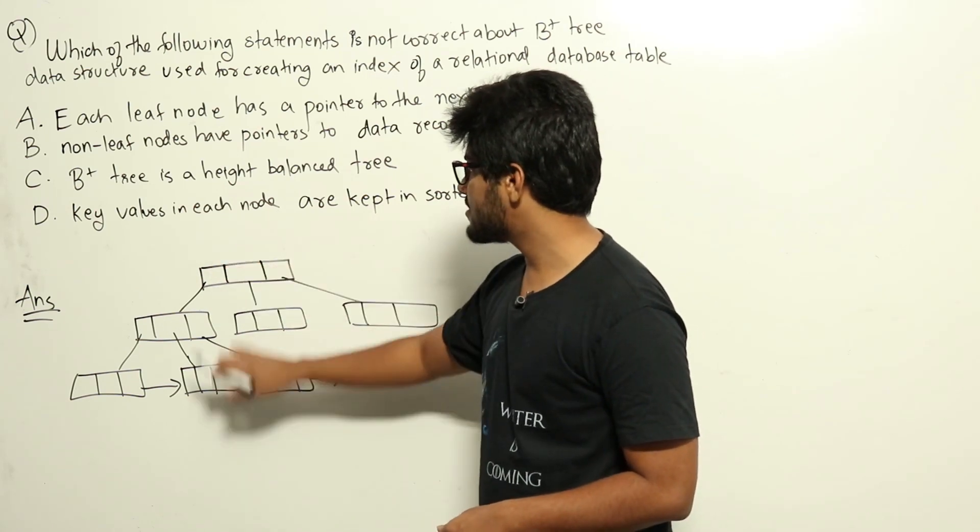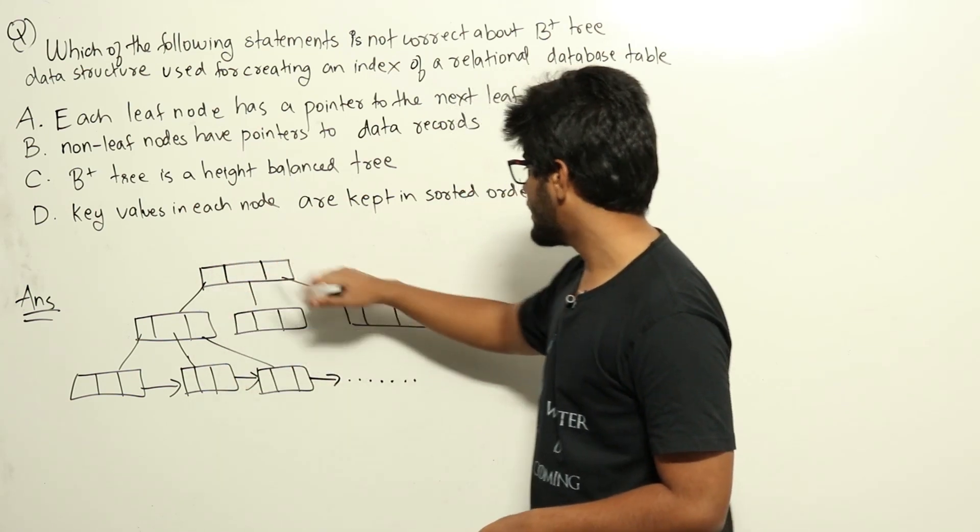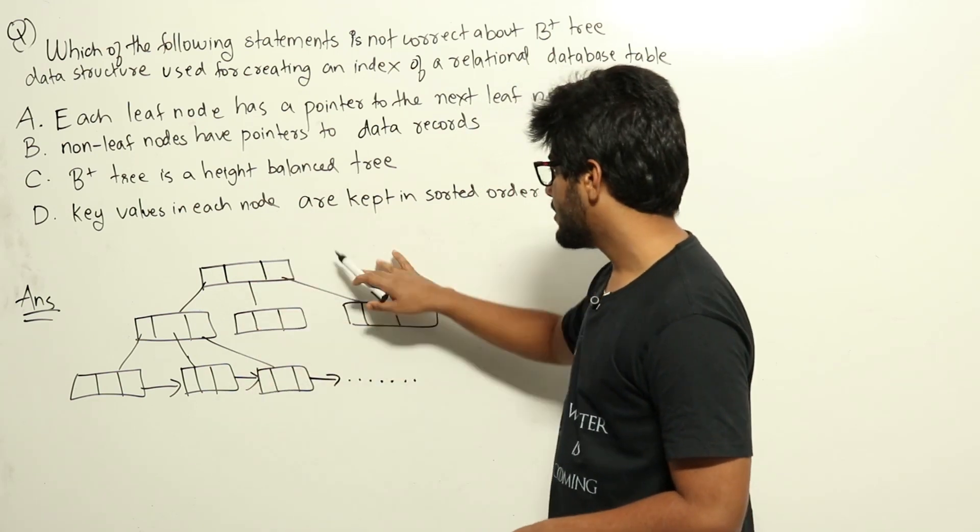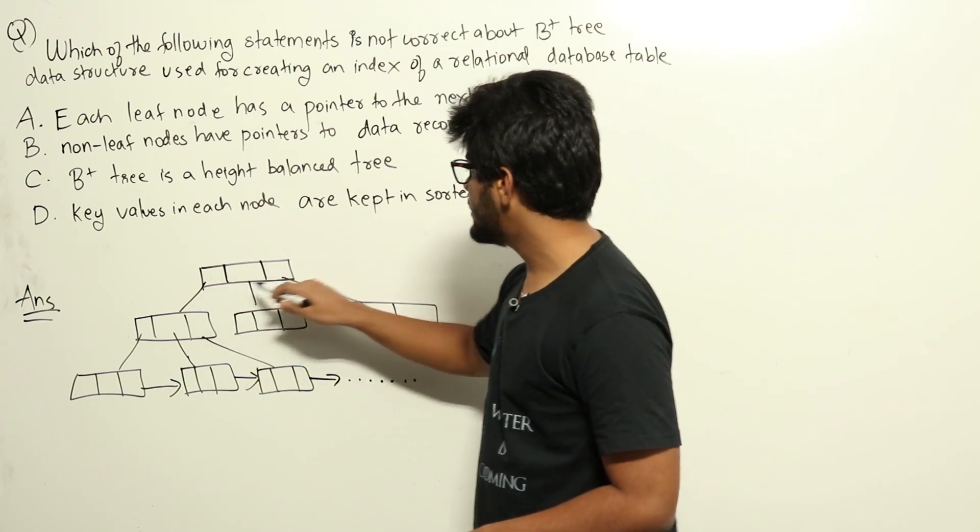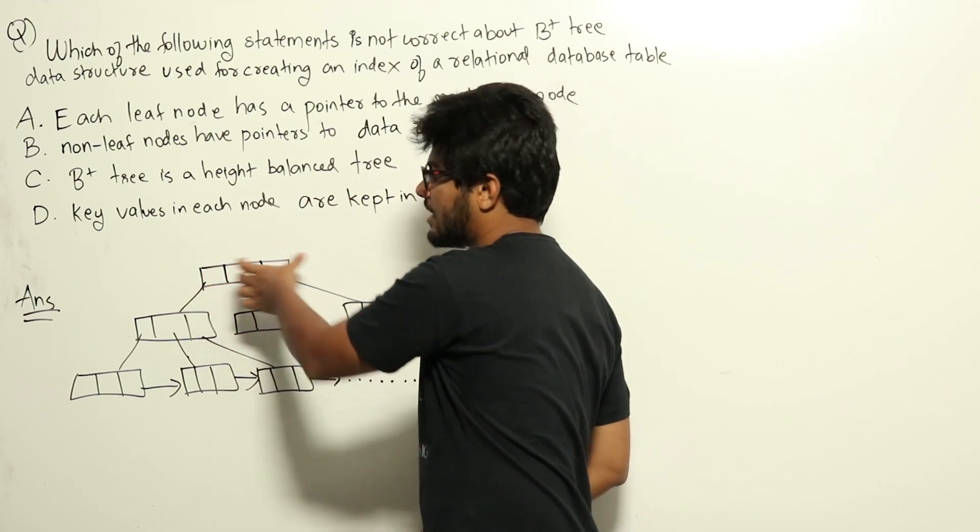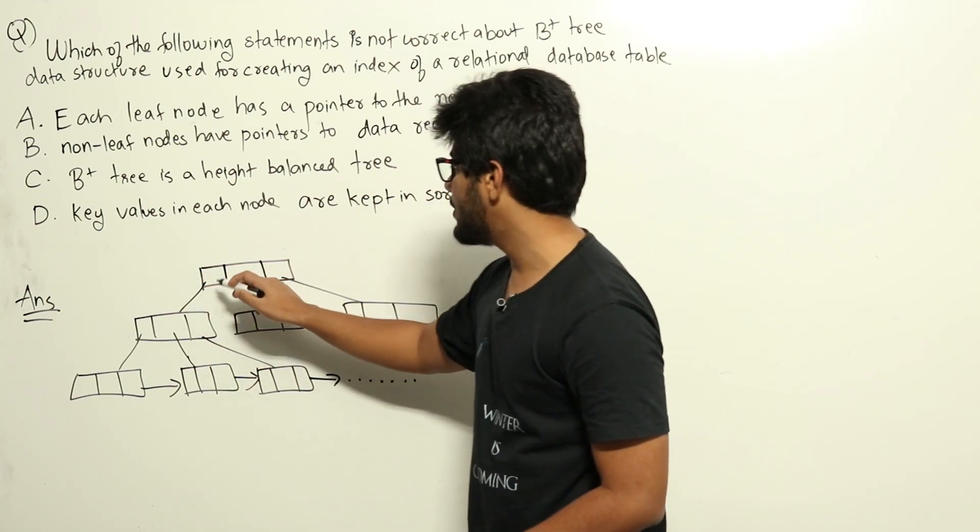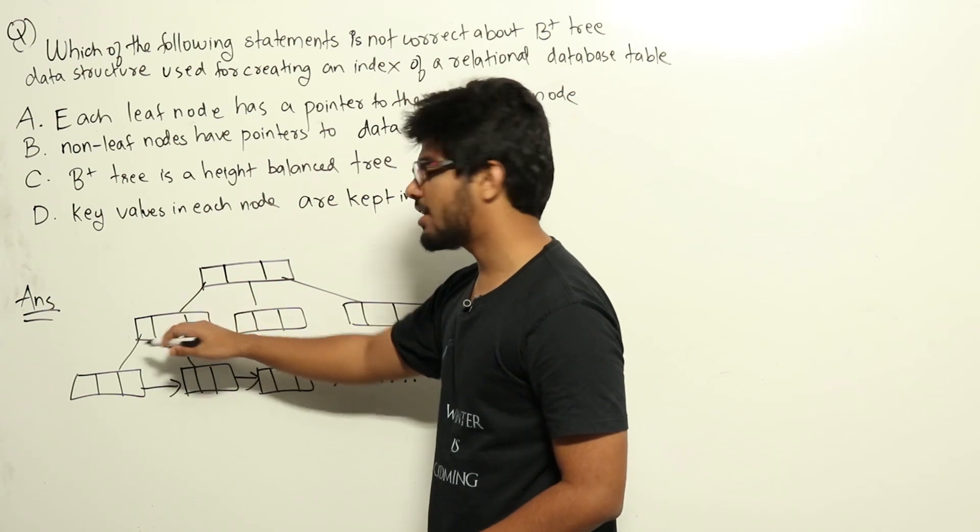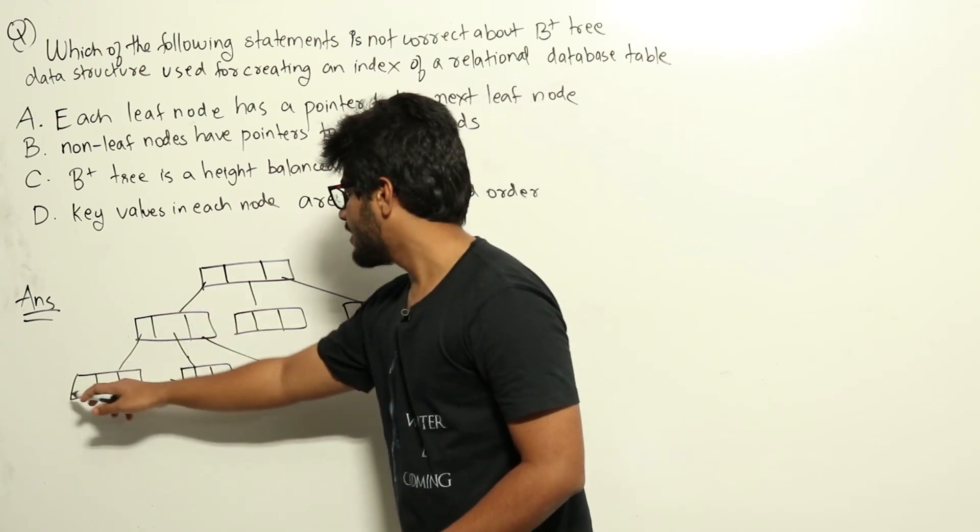B plus trees are height balanced trees which contains nodes in this manner. For each internal node, each internal node will have key value pairs where the value will be pointers to internal nodes only. And in leaf nodes,